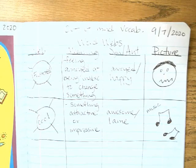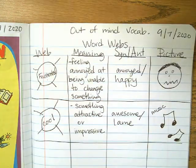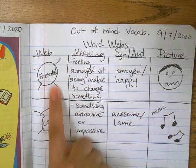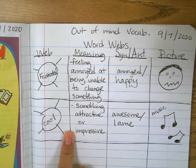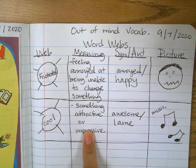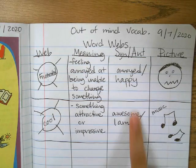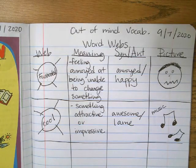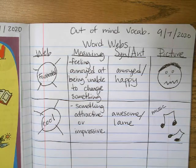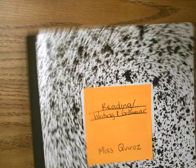We also did this word web with the two first vocabulary words that we read today — frustrated and cool. We have the meanings here, and then we have the synonym and antonym. And we drew an image. So that's something we did here.